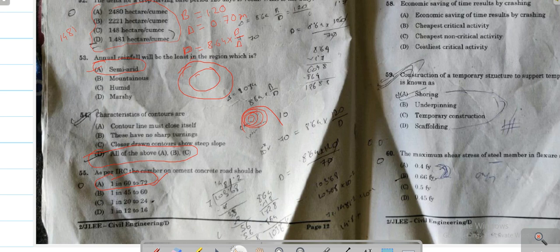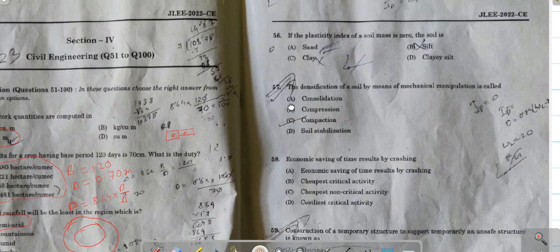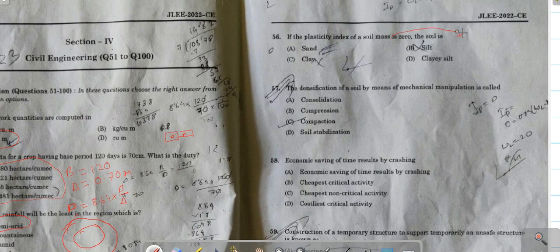Coming to the next question. If the plasticity index of a soil mass is zero, the soil is - plasticity index is defined for fine-grained soil. Fine-grained soil is silty clay. Clay is fine-grained soil or silt is fine-grained soil. Obviously, the combinations of clay and silt is also fine-grained soil.